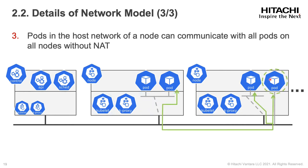The third one is also about pod-to-pod communication, but it is for pods in host network. Kubernetes can assign host network to pods. The definition goes like this: pods in the host network of a node can communicate with all pods on all nodes without NAT. So even in the host network case, the pod can communicate with pods in the same node without NAT, and also with pods in different nodes without NAT.